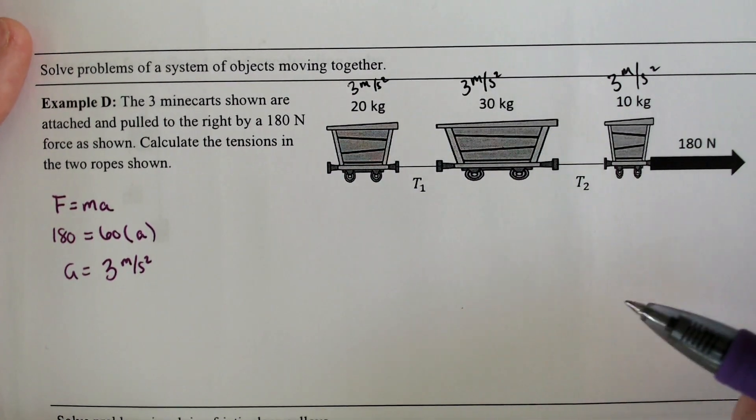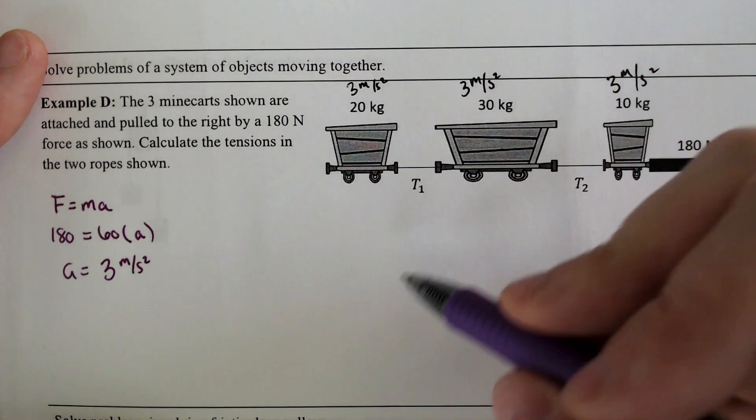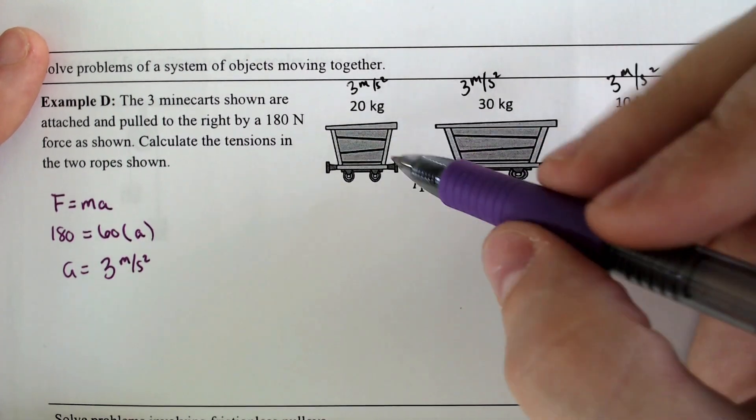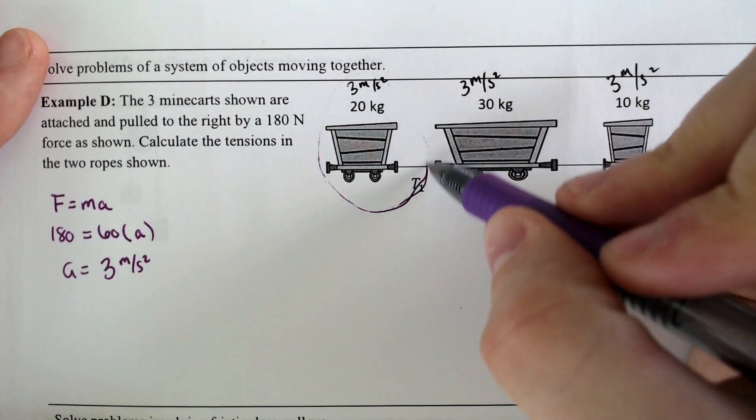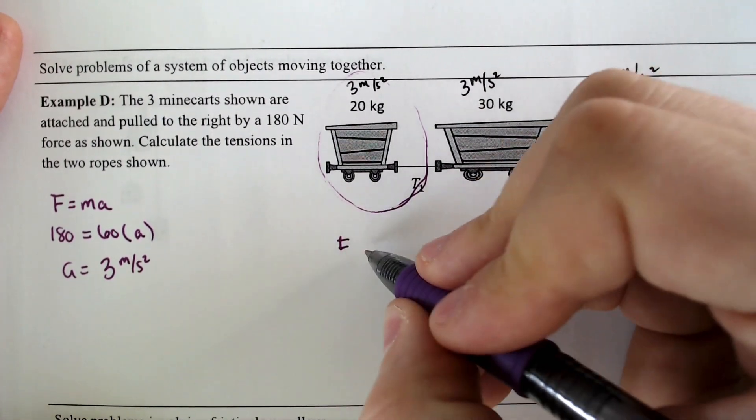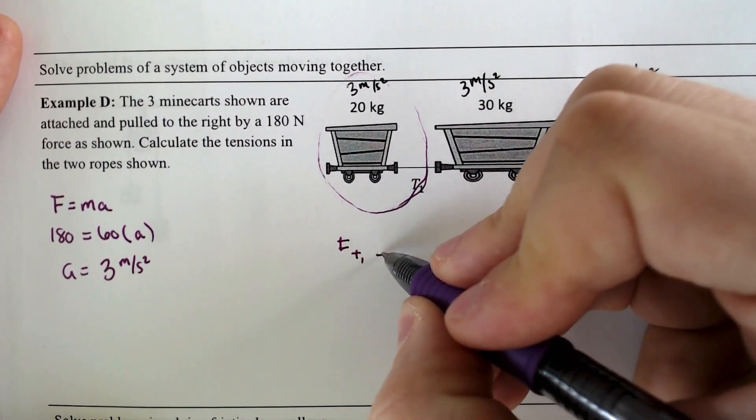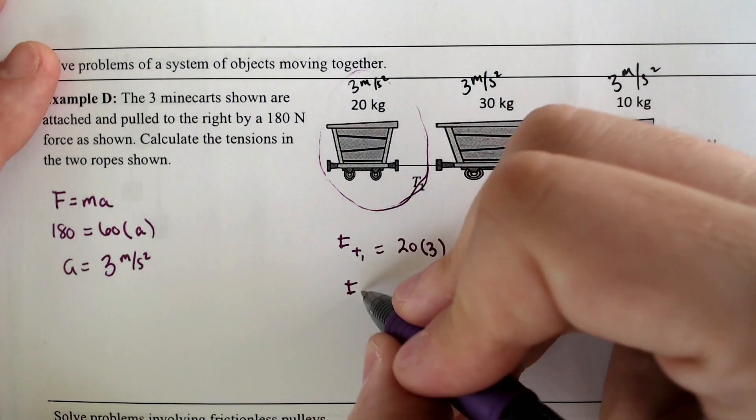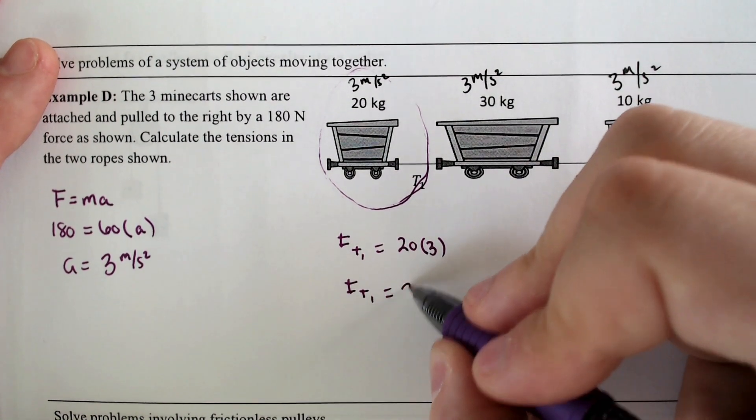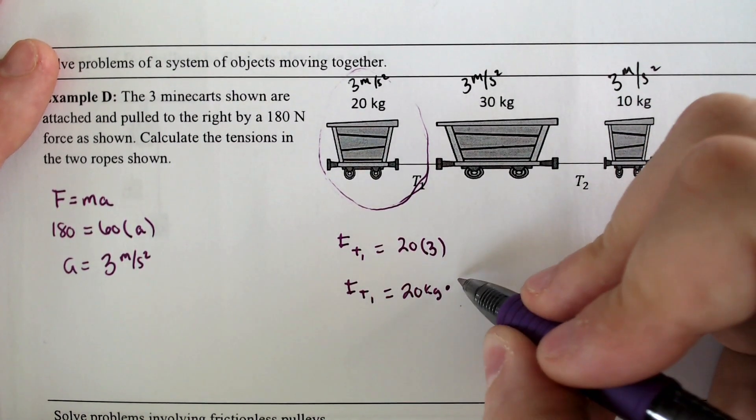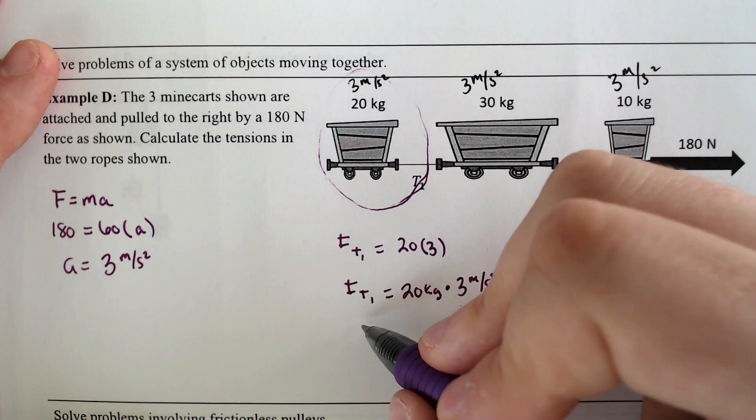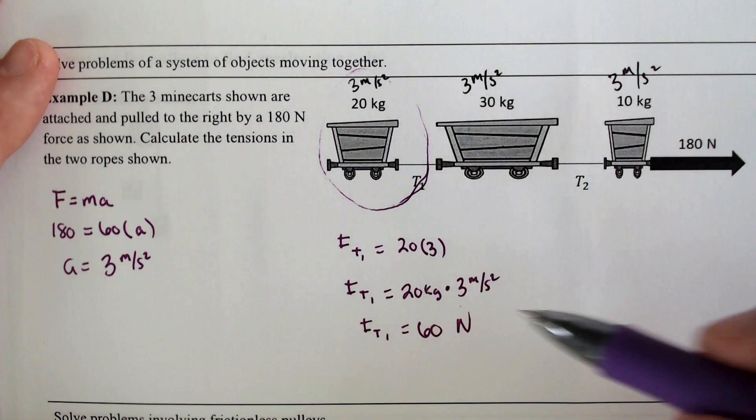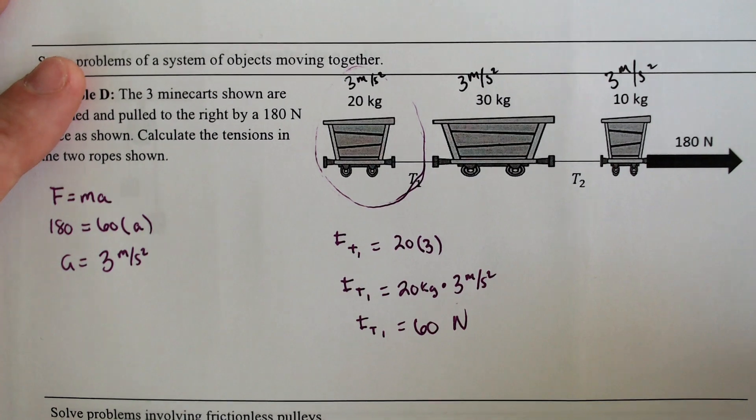So with that in mind, you can solve for each of the tensions separately. Starting with the one in the back probably is the easiest, because the one in the back, it has a mass of 20 kilograms, and it is only being affected by this part right here in the back. So force of tension 1 will be equal to the mass, 20, times acceleration, 3. So the force of tension 1 would be equal to 20 kilograms times 3 meters per second squared. We get that, and we end up with the force of tension 1 is equal to 60 newtons, because newtons is kilograms per meter second squared.